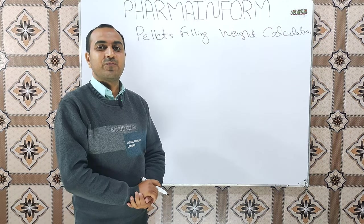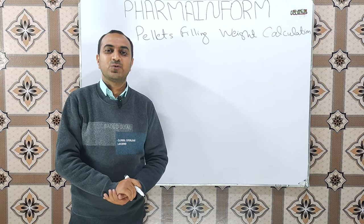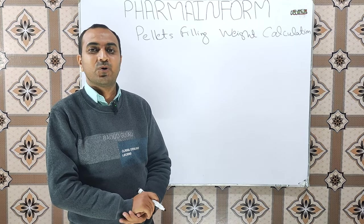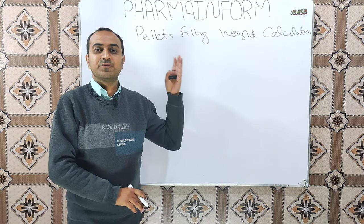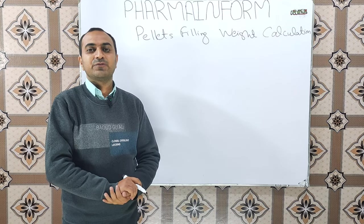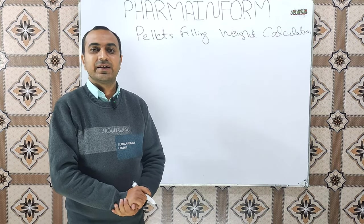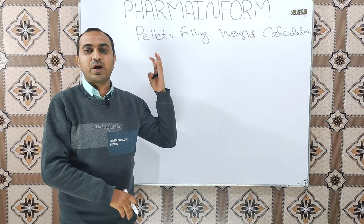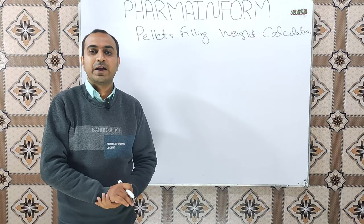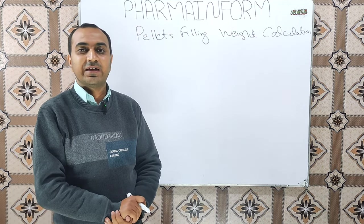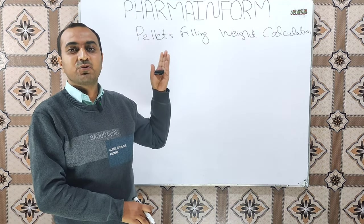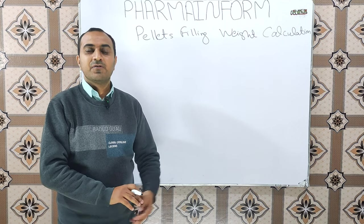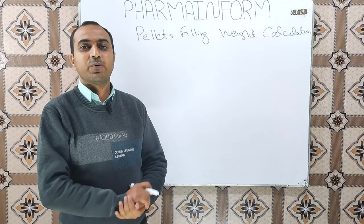Assalamu alaikum, welcome to Farm and Forms. Suppose that you have 8.5% of S-omeprazole in enteric coated pellets — how much weight of these pellets will be filled in hard gelatin capsule shells for the 20 mg potency? And if you have 22.5% of enteric coated pellets of S-omeprazole, how much quantity of these pellets will be filled in hard gelatin capsule shells for the 40 mg product?